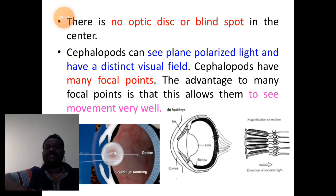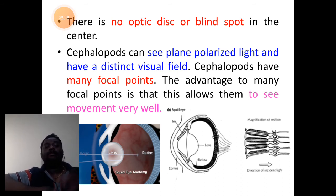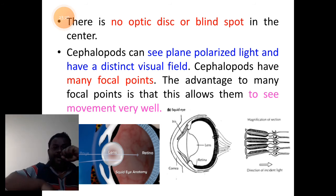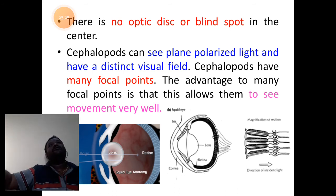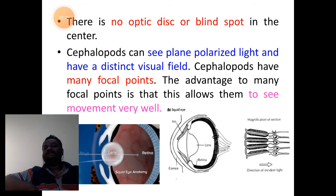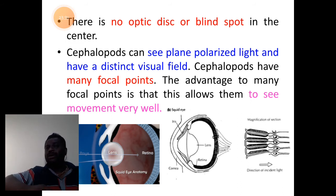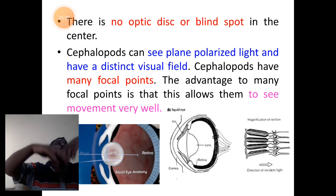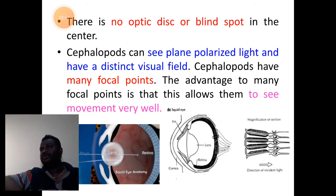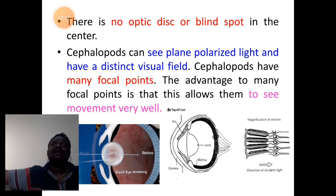Cephalopods can see plane polarized light and have a distinct visual field which can have focusing at many focal lengths and many focal points. It can allow polarized light to pass through into its eyes to have a wider visual area — they can see a wider area of objects.